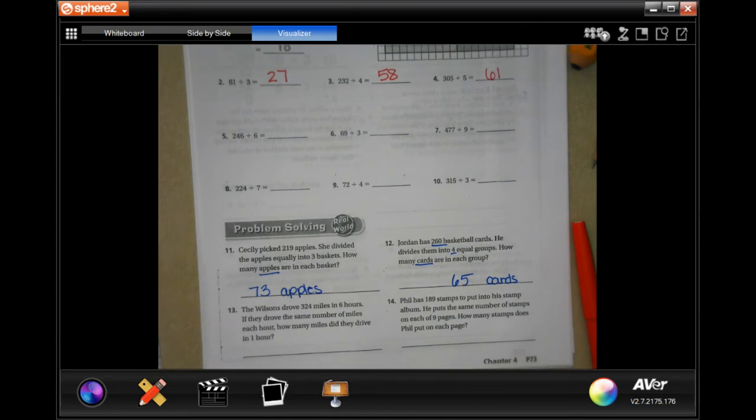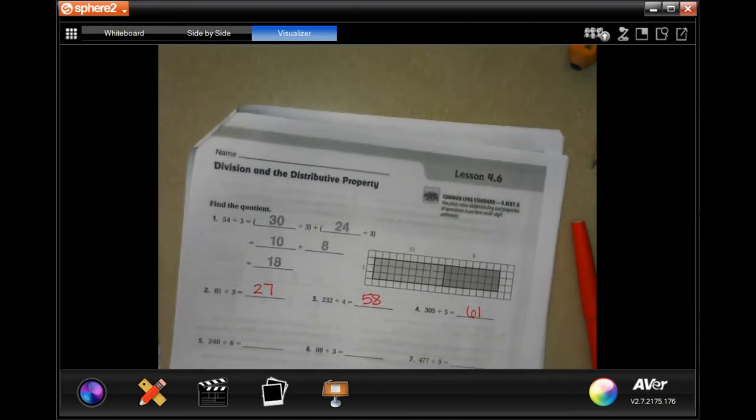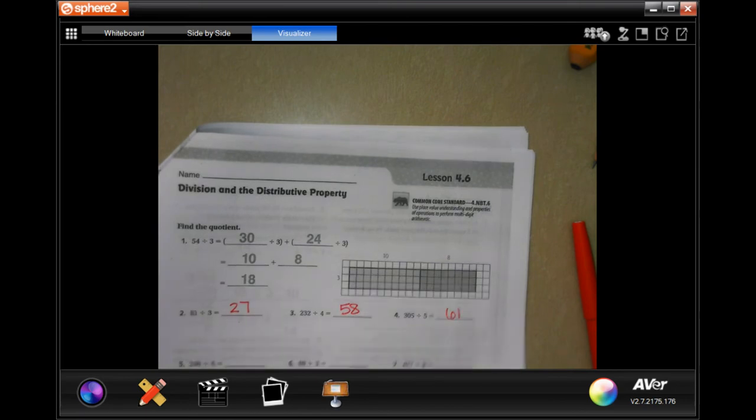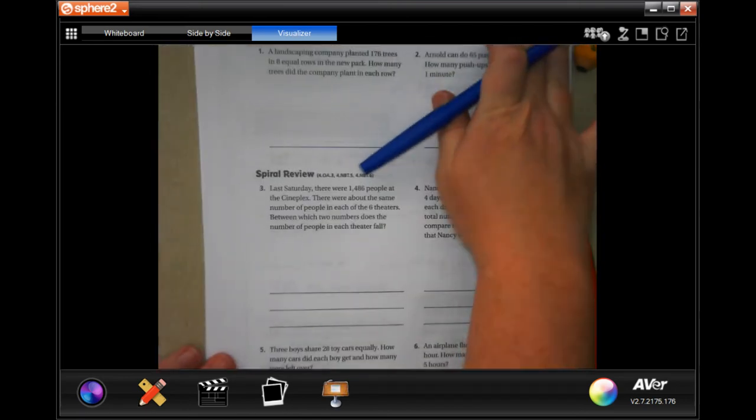All right, you guys are going to do 13 and 14. You guys are also going to do the lesson check on the back. And we're going to go down and do the spiral review.